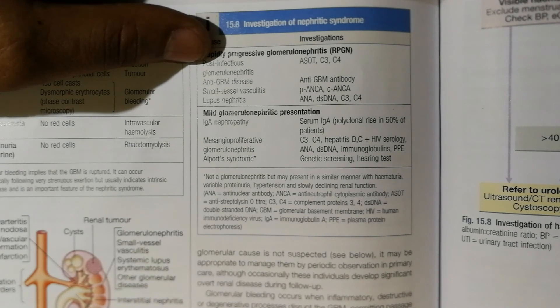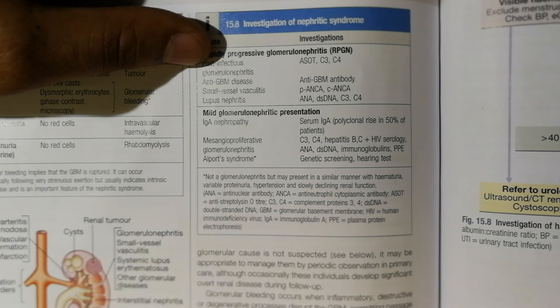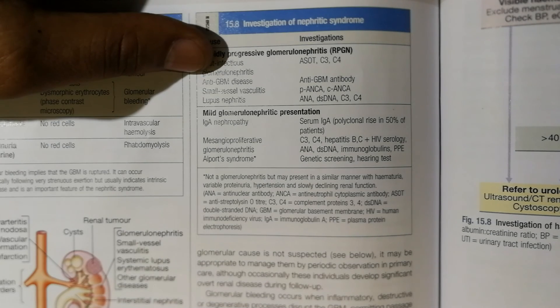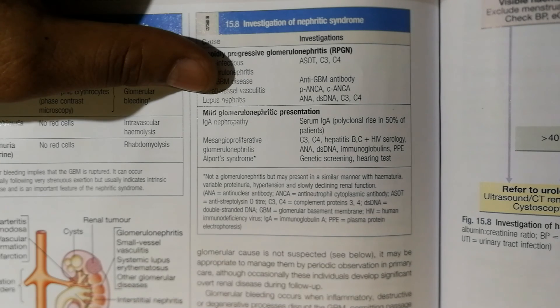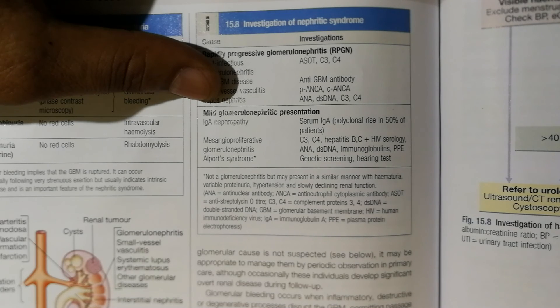For anti-GBM disease, test anti-GBM antibody. For small vessel vasculitis, test p-ANCA and c-ANCA. For lupus nephritis, test ANA, anti-dsDNA, and C3, C4 will be decreased.